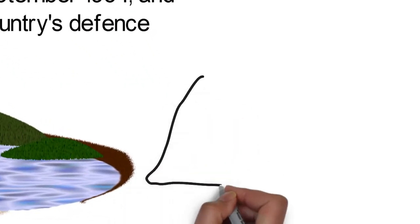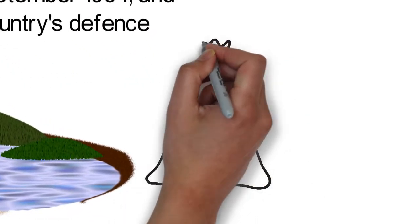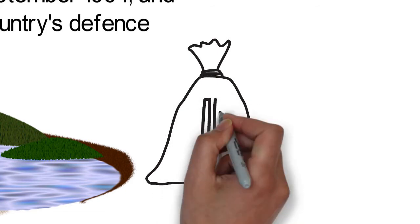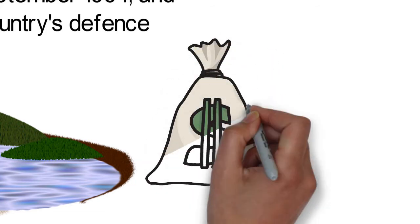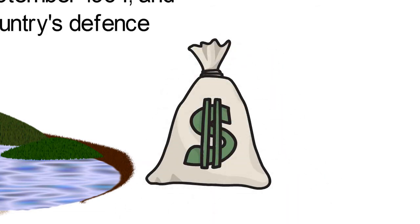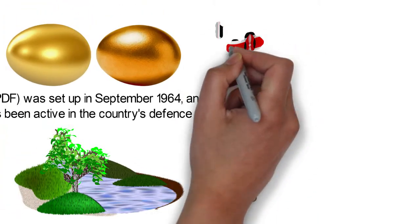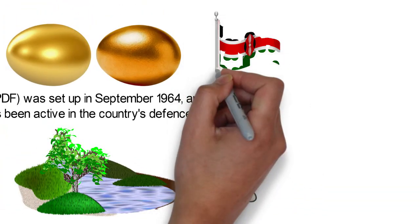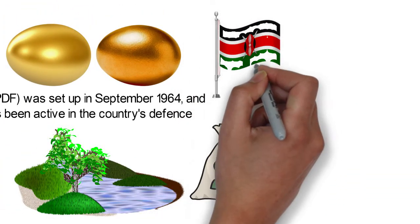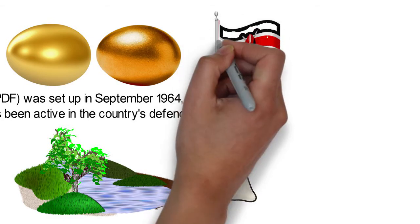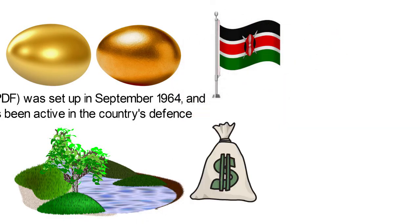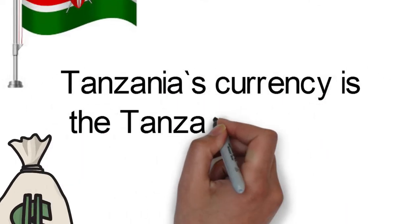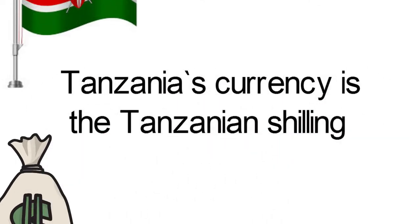In 2019, the country's economy grew by 5.8%, reaching a GDP of $55.5 billion. This economic growth got Tanzania to the position of the second-largest economy in East Africa, coming after Kenya. Tanzania's currency is the Tanzanian shilling.